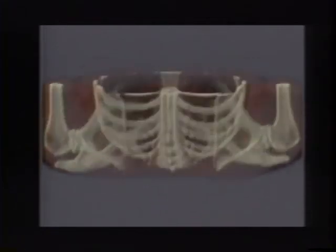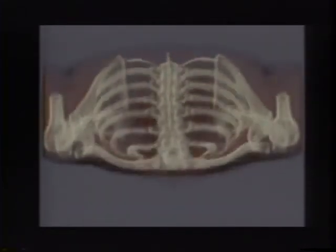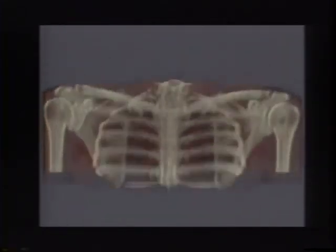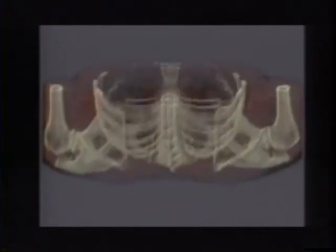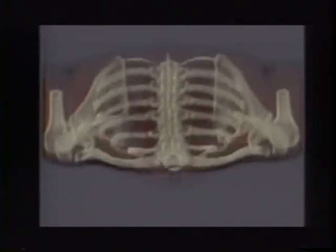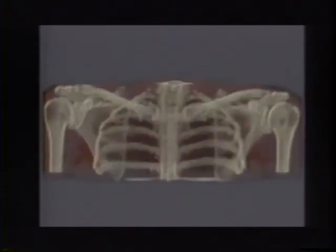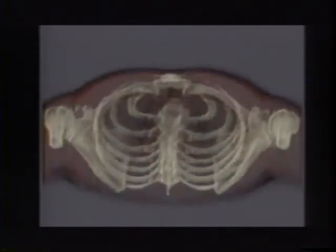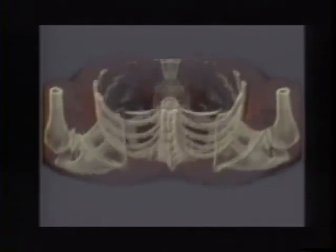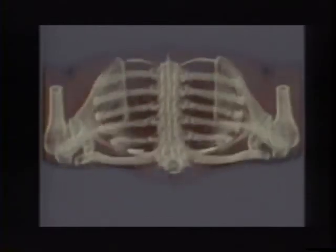This image is another CT scan reconstruction, in this case of a human chest and shoulders. Here, gradients are used to extract information at each voxel, so that traditional computer graphic shading can be implemented.